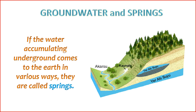4. Temperature — the temperature of spring water can vary, and it is influenced by factors such as the depth of the groundwater source and the geothermal conditions of the area. 5. Location — springs can be found in various landscapes, including hills, mountains, valleys, and plains. The location is often related to the geological features of the region. 6. Ecological Importance — springs play a vital role in supporting ecosystems. They provide a constant source of freshwater, creating habitats for plants and animals. Some species are uniquely adapted to spring environments.